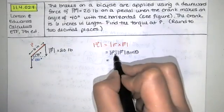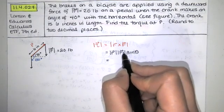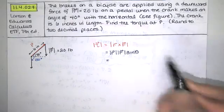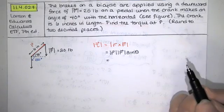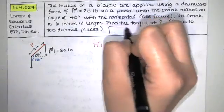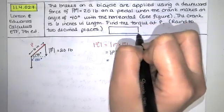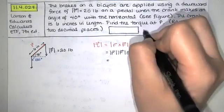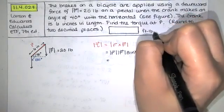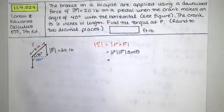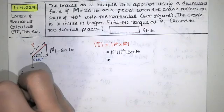So we have the length of r times the magnitude of the force vector times the sine of the angle between them. If you look at the answer on WebAssign, next to the input box it says foot-pounds, so they don't want us to use six inches directly — they want us to convert those six inches to feet first.